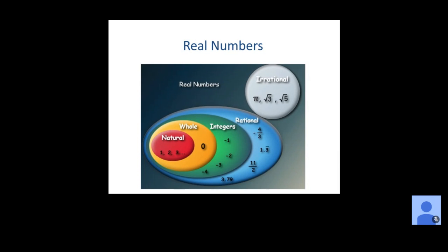Whole numbers are basically your counting numbers and 0 — starting with 0, 1, 2, 3, 4, 5. Natural numbers are only the counting numbers, starting with 1, 2, 3, 4, 5, and so on. You can see this bubble gets bigger as you go. Natural numbers are our smallest set, then we add 0 to make whole numbers, add the negatives to make integers, and then add all the fractions to give us rational numbers.